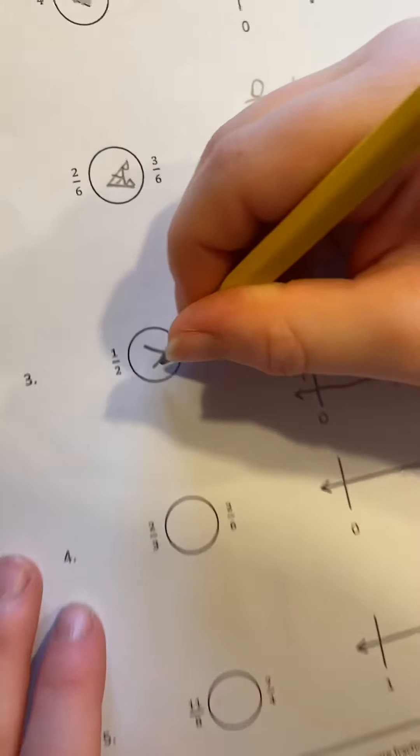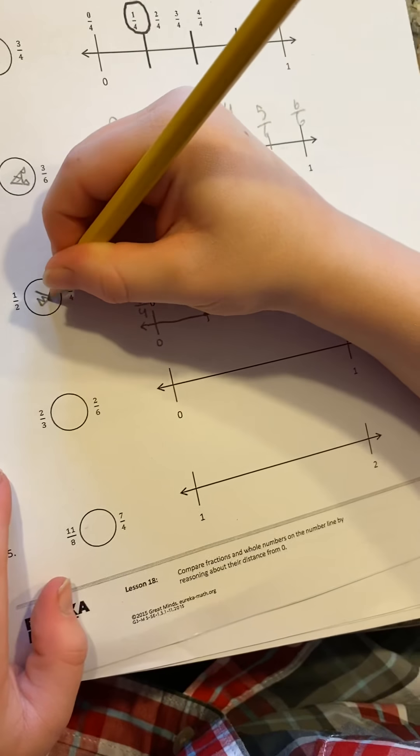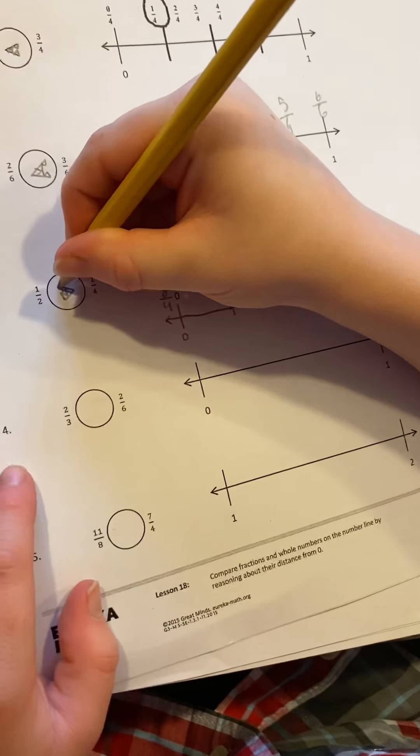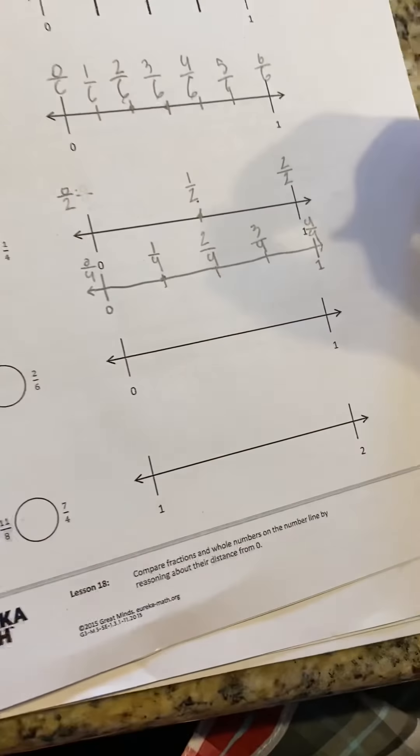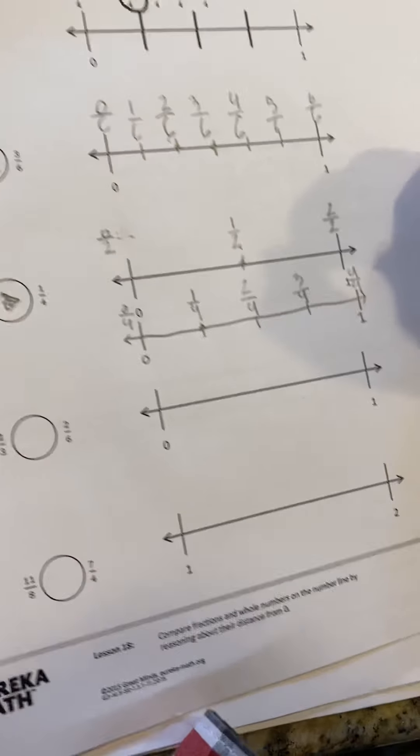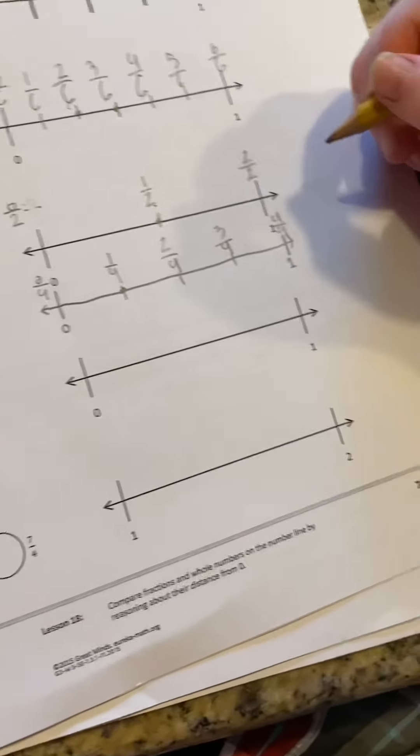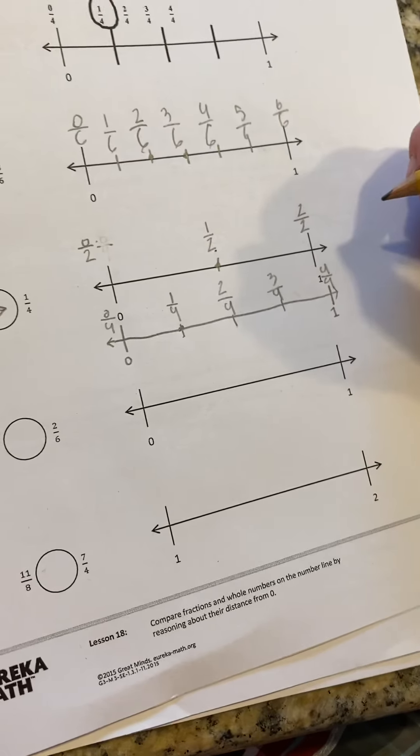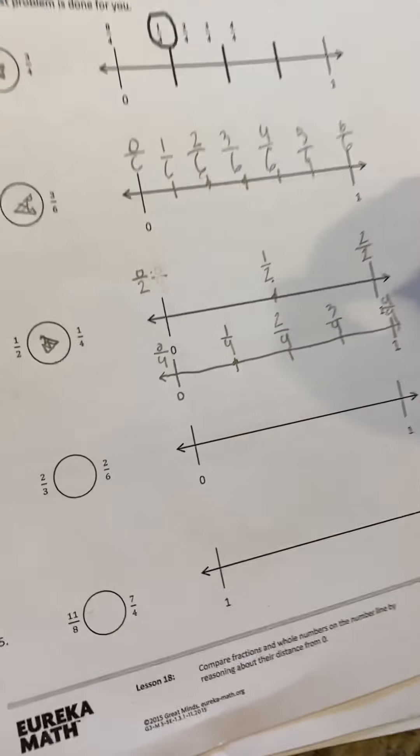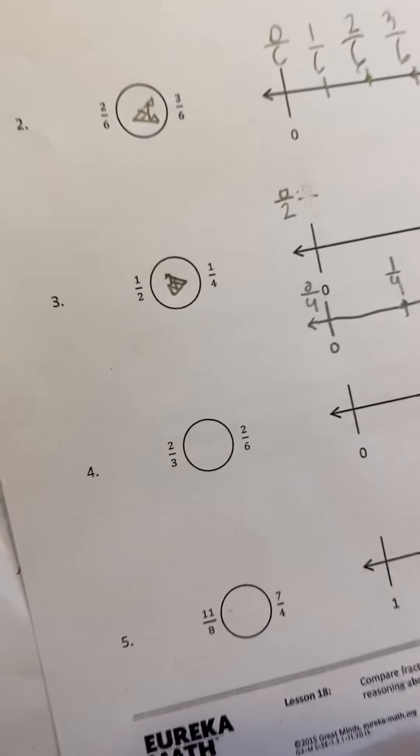Now, go ahead and put a plot point on one-fourth and one-half. Which one is further from zero? One-half. Which one is closer to zero? One-fourth. So that means the alligator is going to eat the one-half for sure.